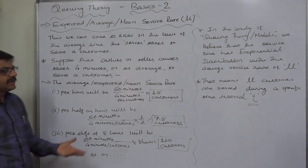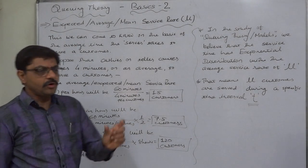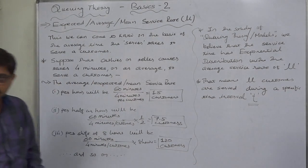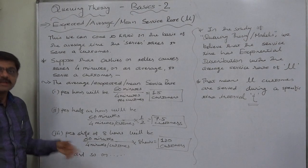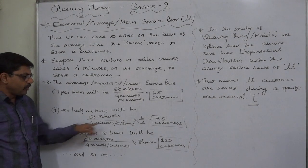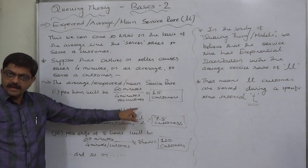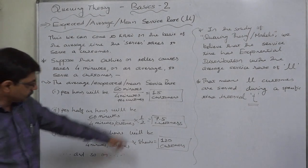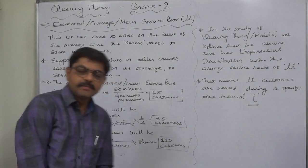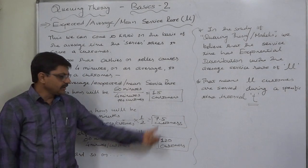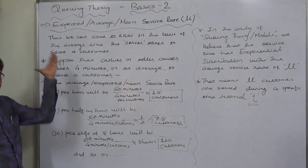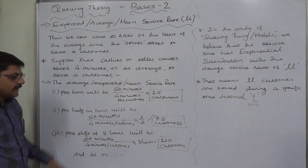Similarly, if we are interested in studying all these for a time interval of half an hour — that means t equals 30 minutes — the calculation will be 60 divided by 4, multiplied by one half, giving 7.5. Actually, there can never be 7.5 customers, but this is a result of calculation. The mean can take any value from the recorded values.